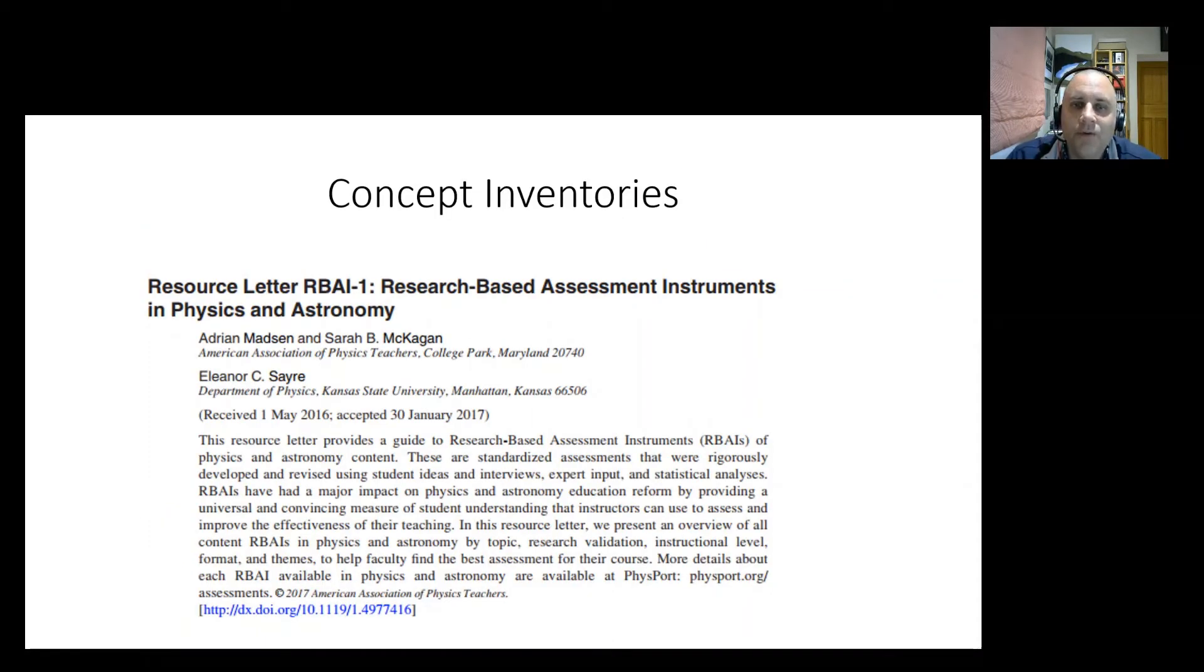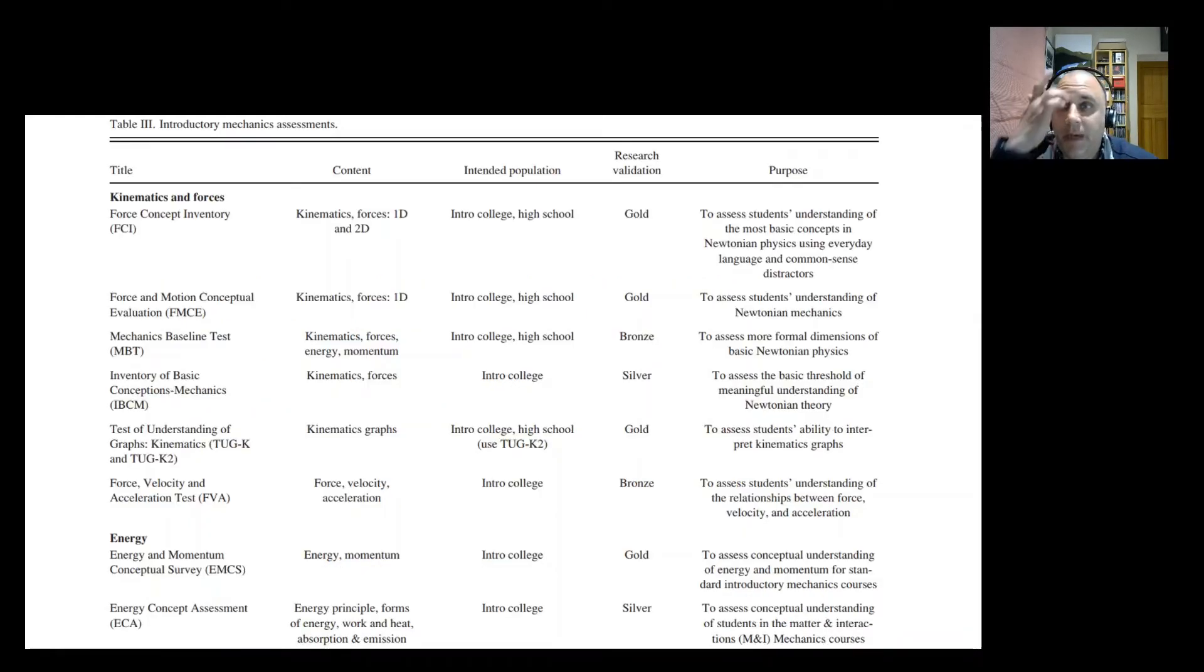Turns out there are loads of them. So if you want to know more about concept inventories, this is the paper to get hold of, RBA I one that lists all of them. And here's a quick snapshot from one of the pages on it. You'll see that there's multiple ones on kinematics and forces, on energy, on other topics. You'd also see that when they talk about intended population there, some of them are written saying for college based students, but because of the differences in context between America and the US system, most of these concept inventories are written in the US, a lot of things that are pitched at college level are actually appropriate for GCSE A level.